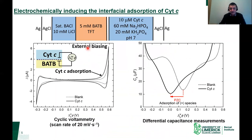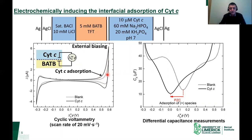In the absence of the sacrificial oxidant, with just cytochrome C in the aqueous phase and the organic electrolyte, cyclic voltammetry at a liquid-liquid interface shows that the potential window is limited by ion transfer processes rather than redox reactions. At positive potentials, we get ion transfer of aqueous cations — sodium and potassium — from the aqueous phase to the organic phase. At negative potentials, we get the ion transfer of phosphate from the aqueous phase to the organic phase. These two ion transfer processes limit our available potential window.